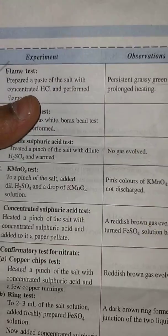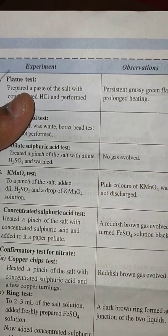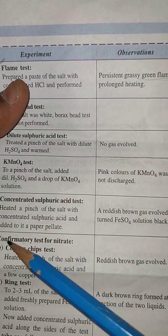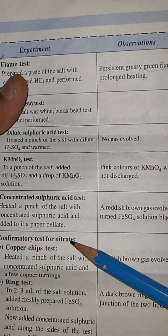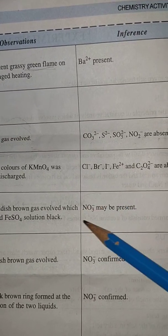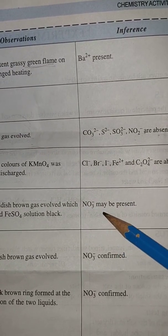Now these are all the gases which one will be present maybe. Now just go for the confirmatory test of nitrate. Maybe nitrate is present because the last stage is this: NO3⁻ may be present.